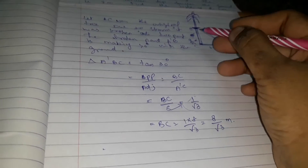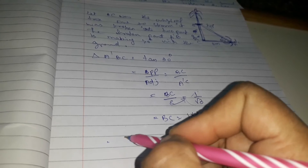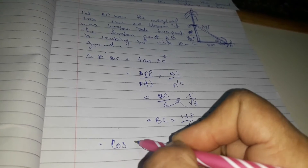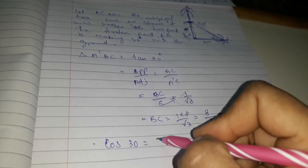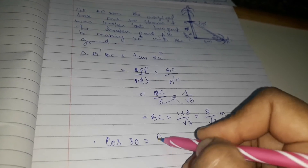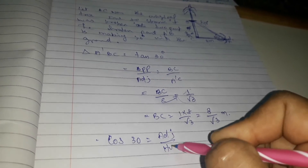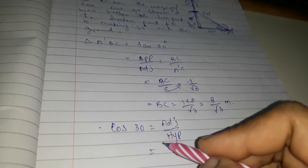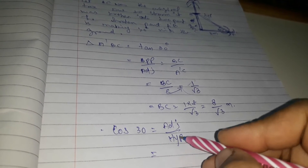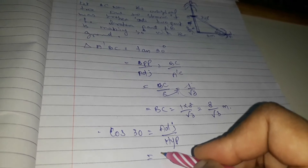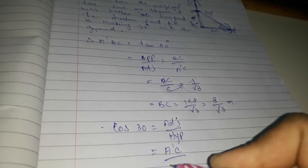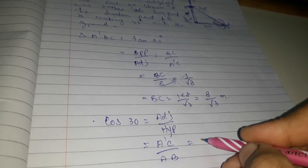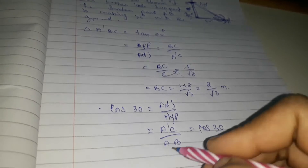Next, we calculate the hypotenuse. The hypotenuse is found using cos 30. Cos 30 equals adjacent by hypotenuse, so A-dash-C by A-B equals cos 30.